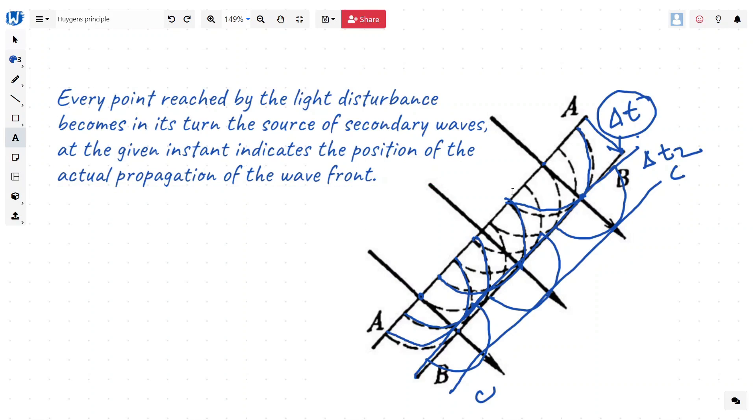All the points become secondary wave origin or source of secondary wave, and by finding these points, we can find how the light is propagating.